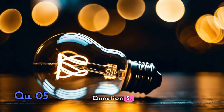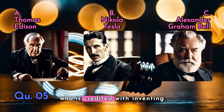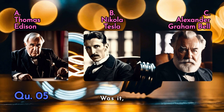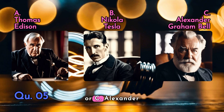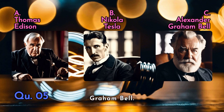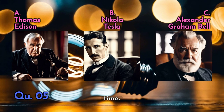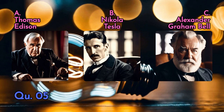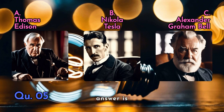Question five: In the realm of invention, who is credited with inventing the light bulb? Was it A) Thomas Edison, B) Nikola Tesla, or C) Alexander Graham Bell? Illuminating the world one invention at a time. The answer is A — Thomas Edison.